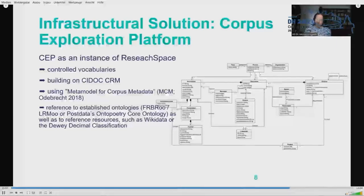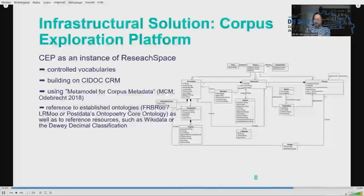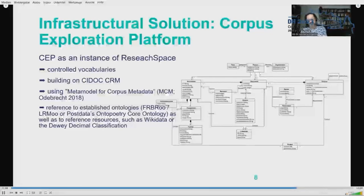The ontology also references resources such as Wikidata and the Dewey Decimal Classification, as well as other controlled vocabularies and, above all, relevant devices.